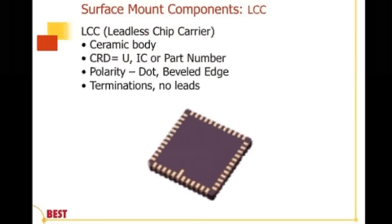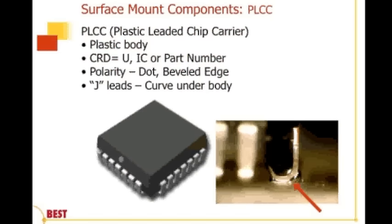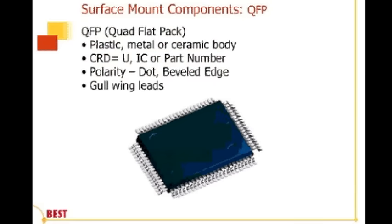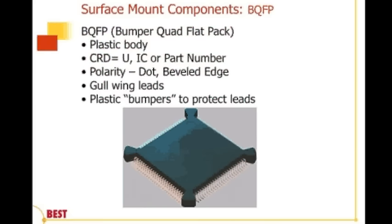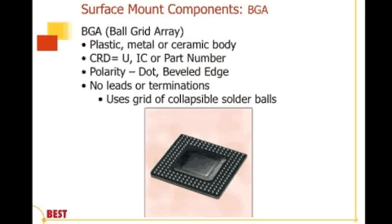Then we have leadless chip carriers, typically ceramic bodies for high-temperature, high-current applications. This package has been around a long time; there are no leads and it has a polarity marking. Then we have PLCCs, or plastic leaded chip carriers, featuring J-leaded components. Then we have QFPs — a high-density package style with gullwing leads. As the pitch got smaller, those leads became more prone to bending, so bumpers were added to the corners. BGAs can come in plastic, metal, or ceramic body package styles and have a dot, bevel, or some kind of marking for pin-one location.